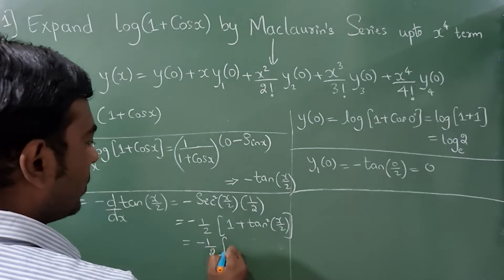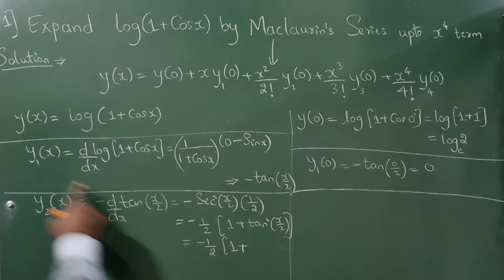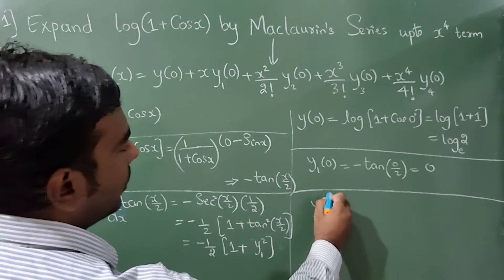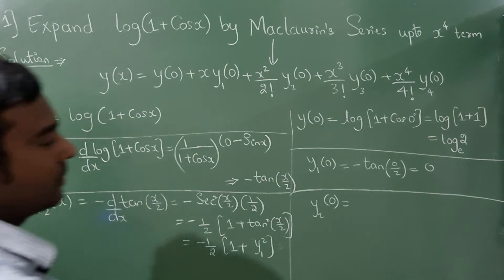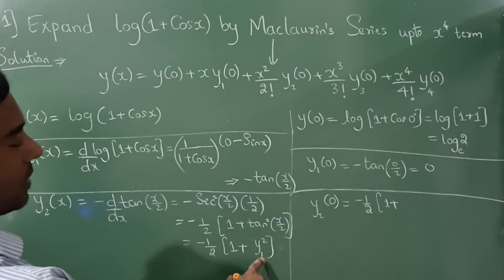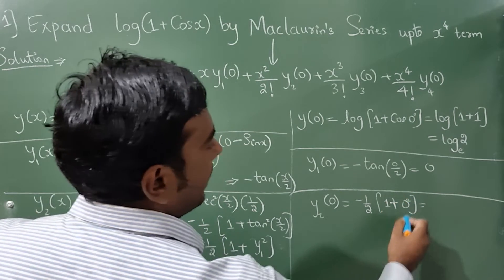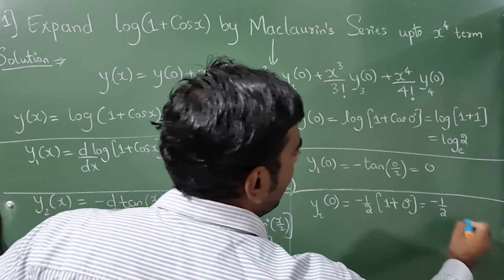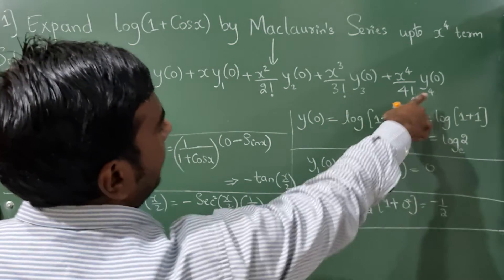Since tan(x/2) = y₁, we write y₂(x) = −(1/2)·(1 + y₁²). To find y₂(0): substitute y₁(0) = 0, so y₂(0) = −(1/2)·(1 + 0²) = −(1/2)·1 = −1/2. So y₂(0) = −1/2.